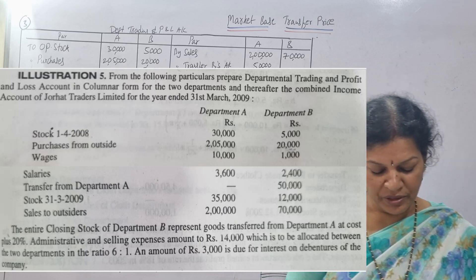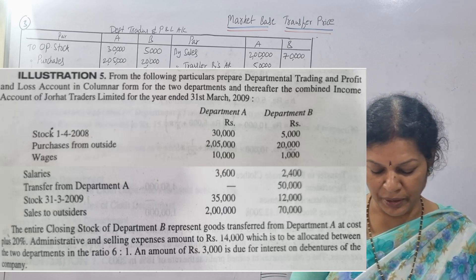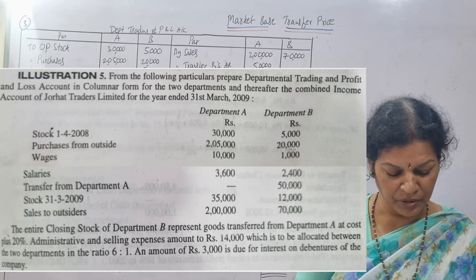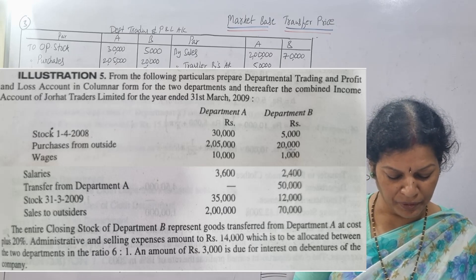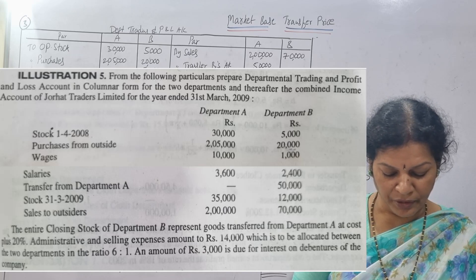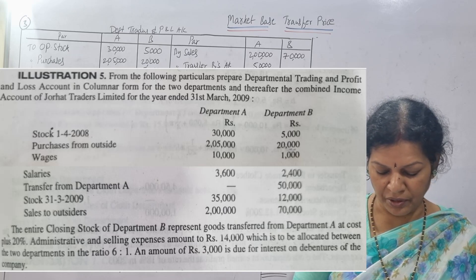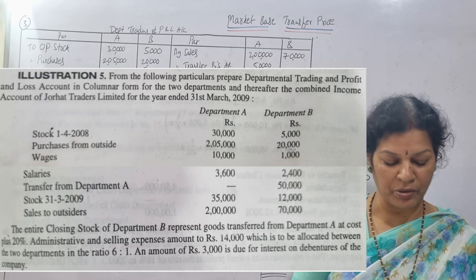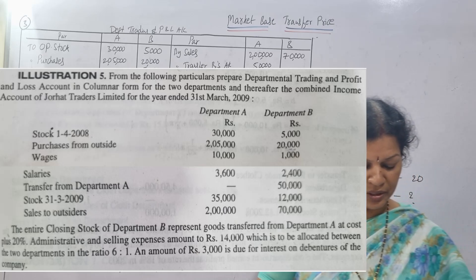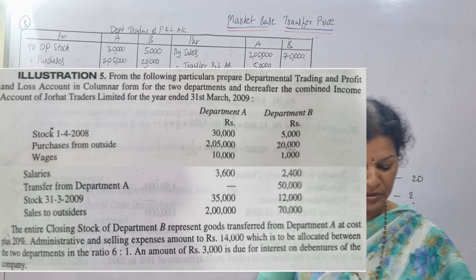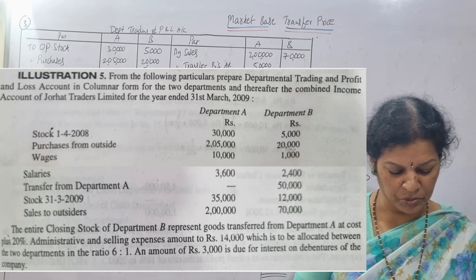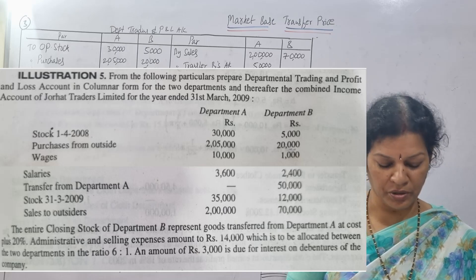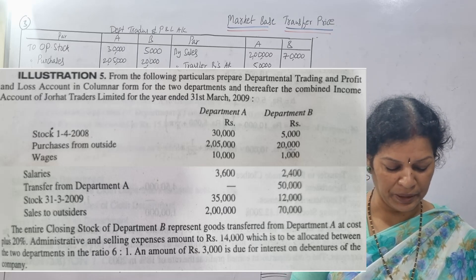The problem says: from the following particulars, prepare departmental trading and profit and loss account in columnar form for the two departments, and thereafter the combined income account of Johar Traders Limited for the year ending 31st March 2009. What is given to us? Information related to Department A and Department B.